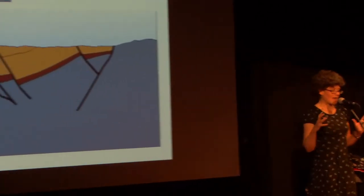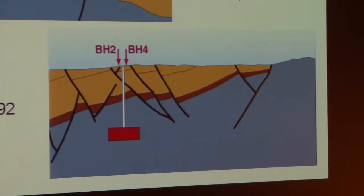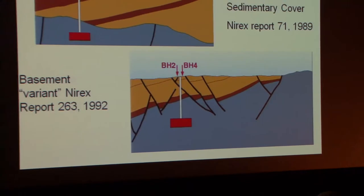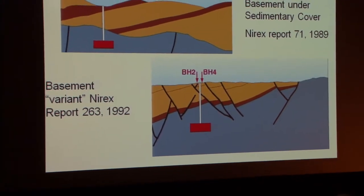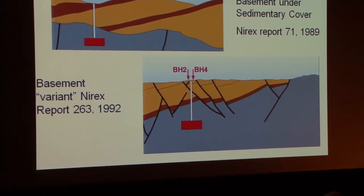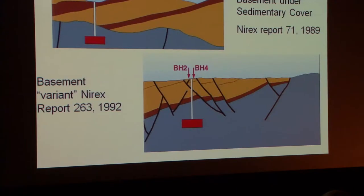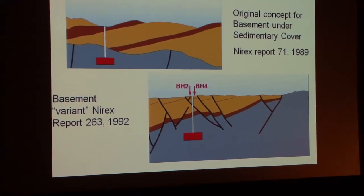In order to bring the Sellafield area back into consideration in 1992, NIREX came up with the idea of a 'busked variant site,' shown in the lower picture. The big difference is that the basement rock outcrops — the grey comes up to the surface and is exposed where water in the form of rain may enter that rock.